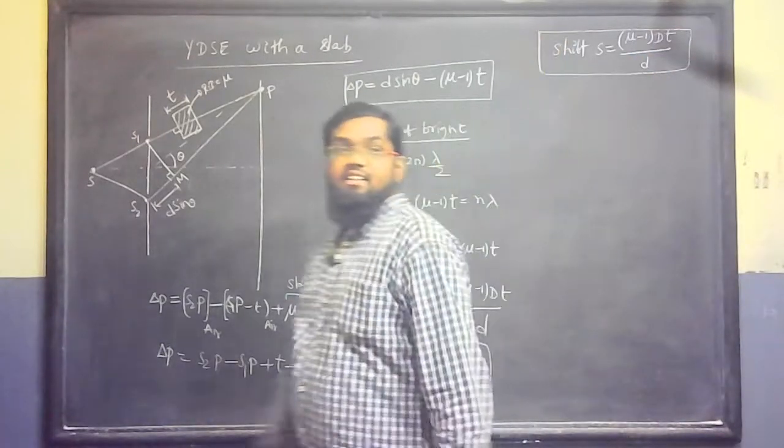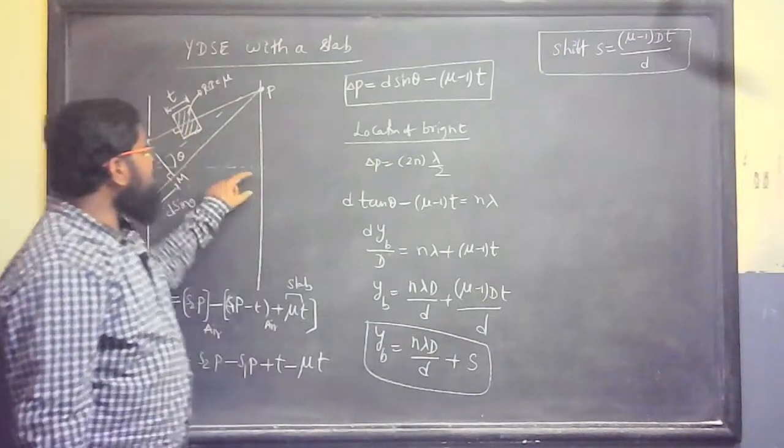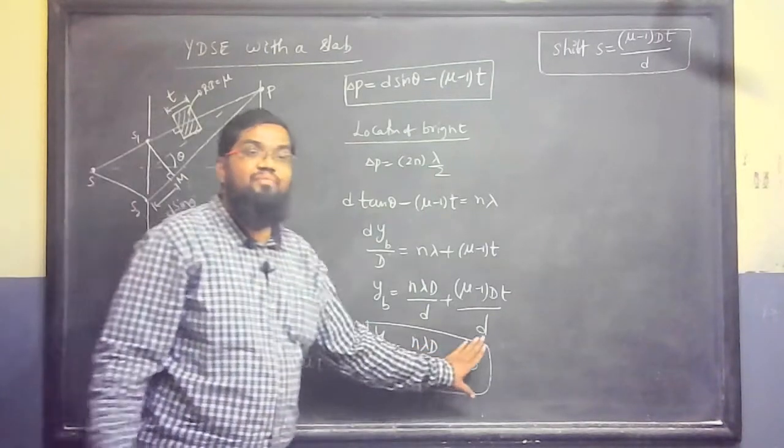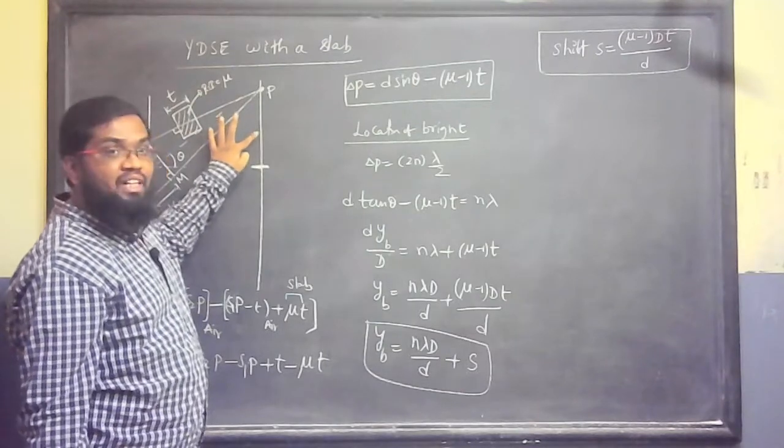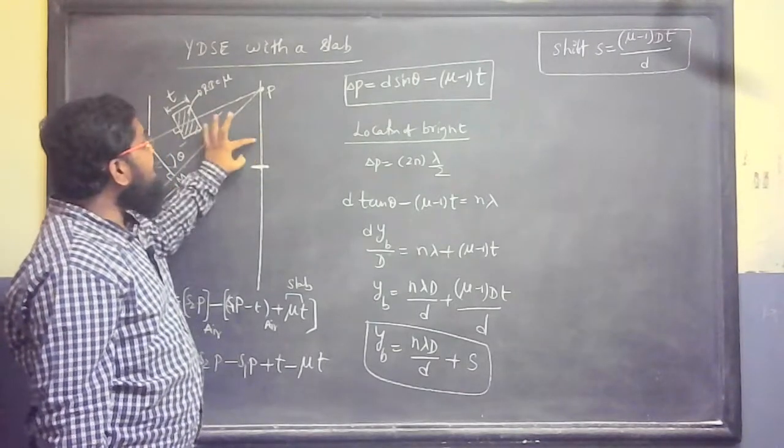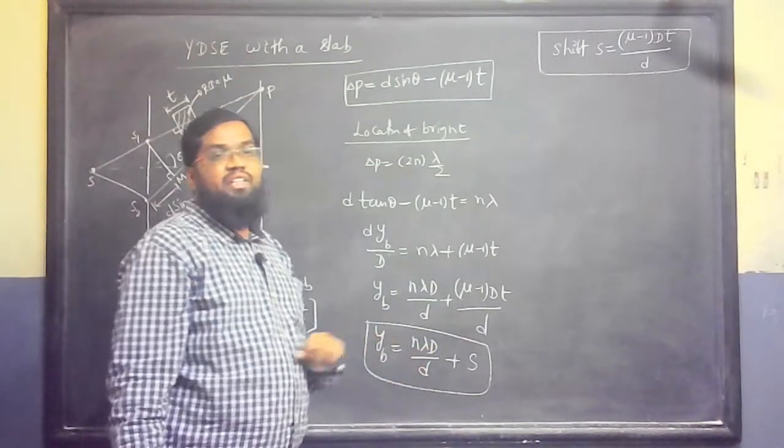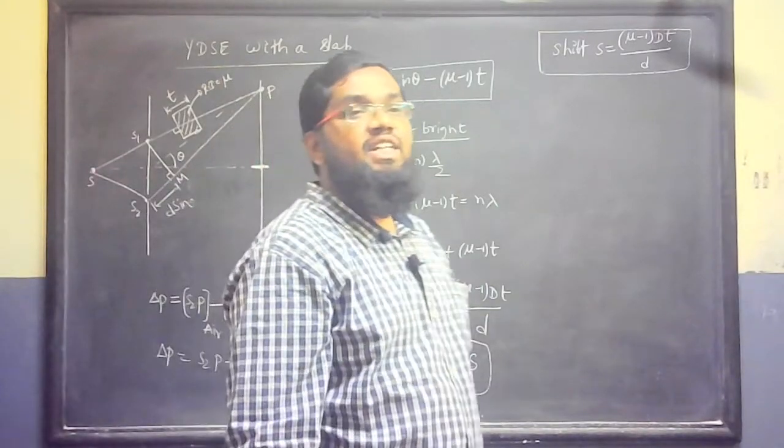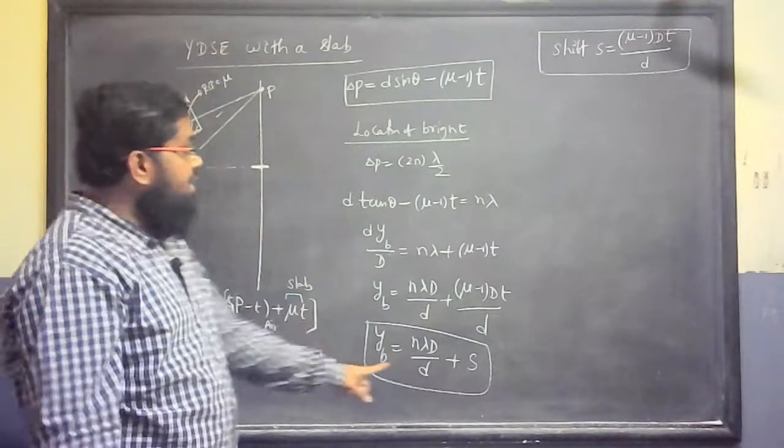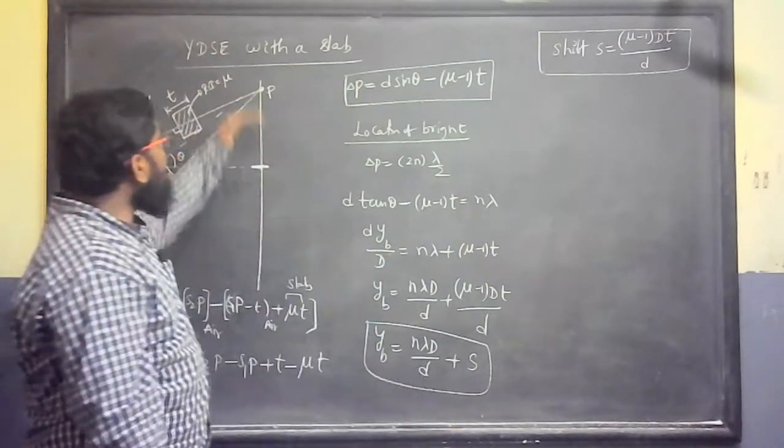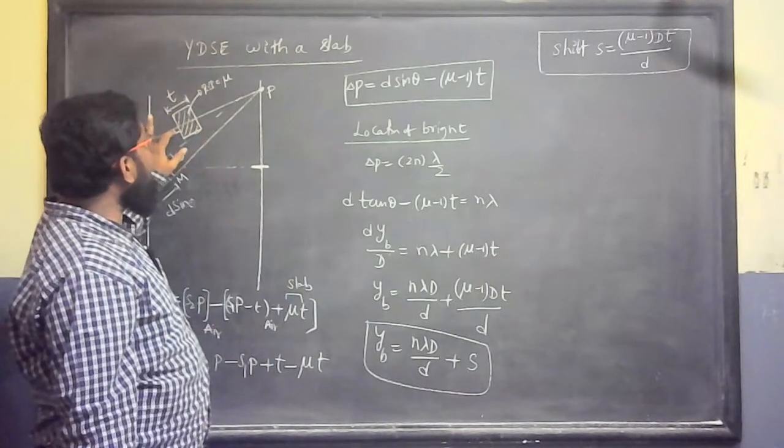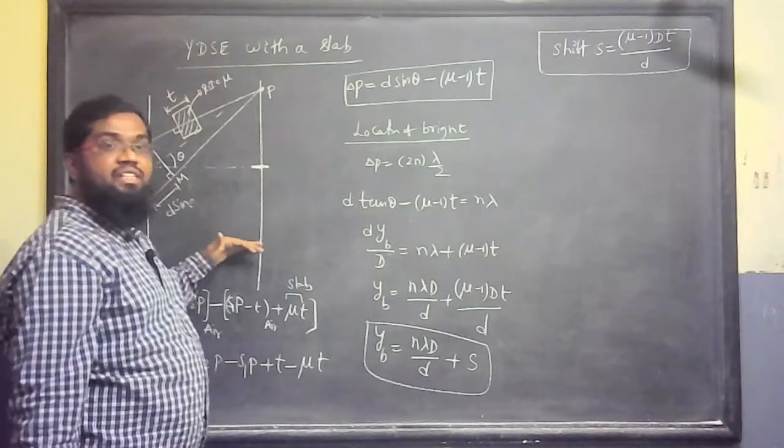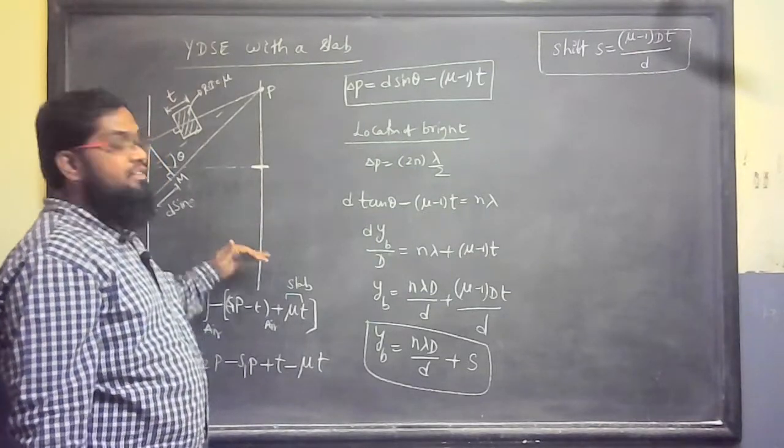This I call as the S. That is known as the shift. S will be equal to mu minus 1 D T divided by D. Shift of the fringes. Central bright, N equal to 0. N equal to 0 means y equal to 0. Now, first bright, N equal to 1. N equal to 1, that means lambda D by D plus S. Every fringe is shifted by an amount of S. All bright fringes shift equally by an amount of S. Upward or downward? Upward. Slab on S1, S1 towards S1. S2 towards S2.